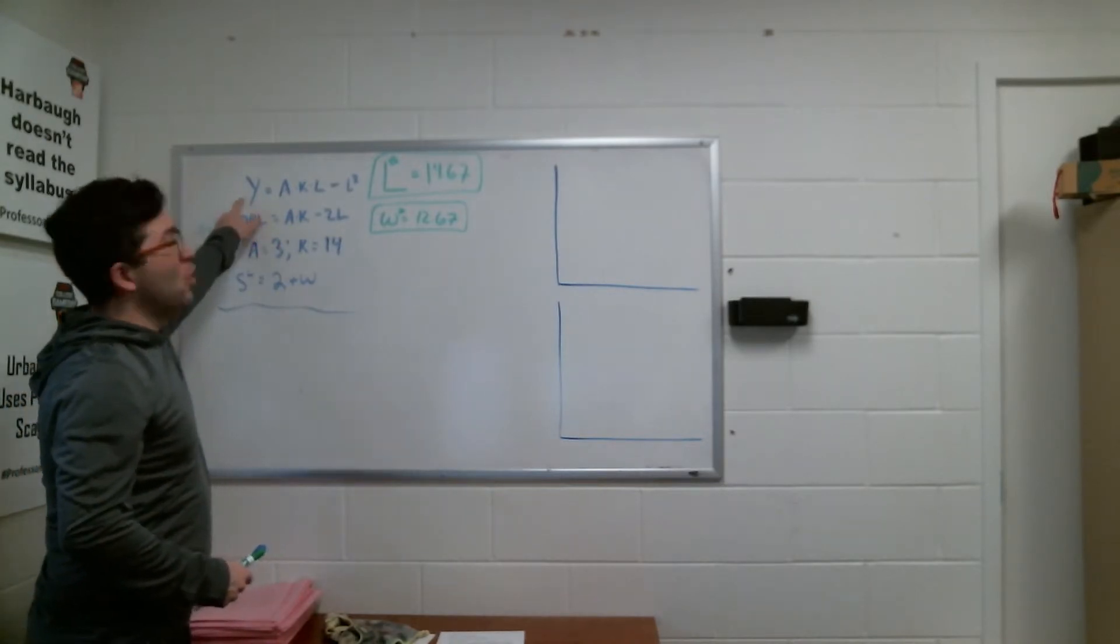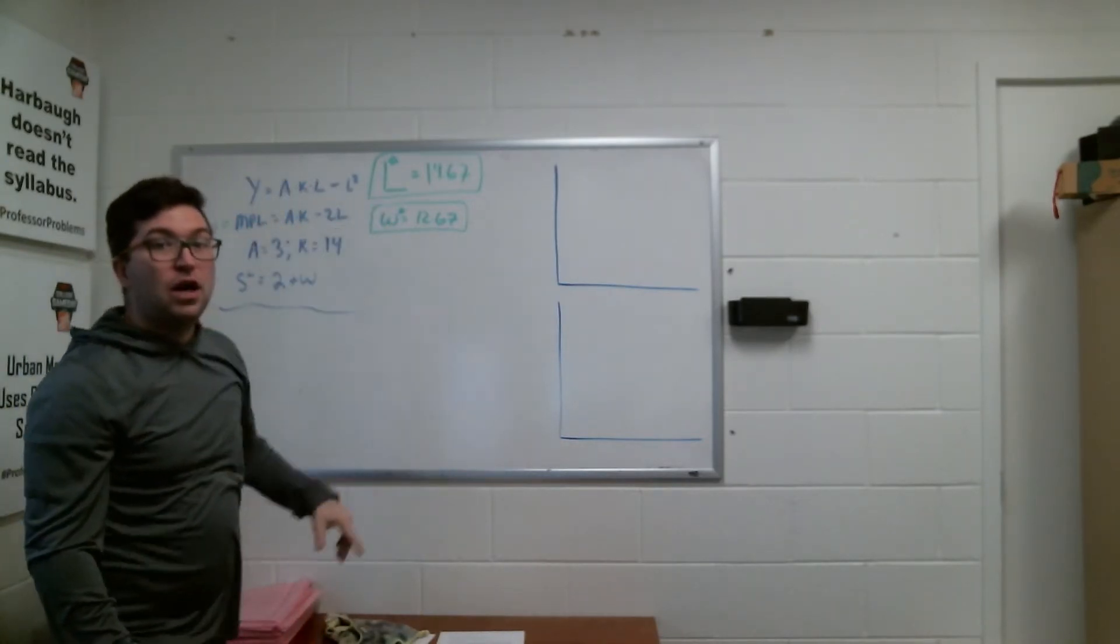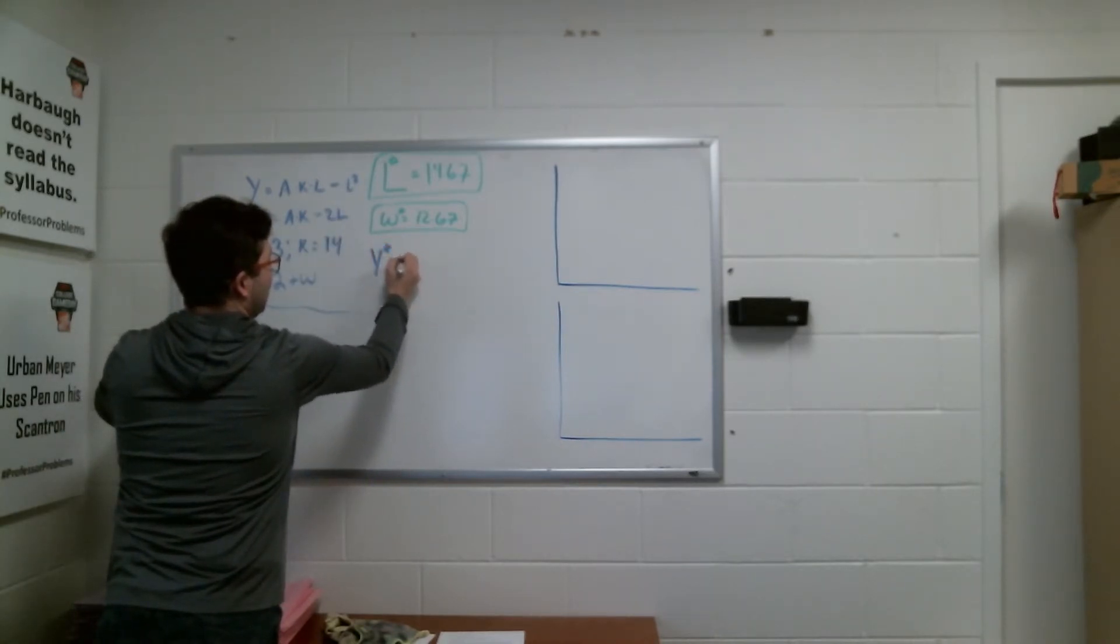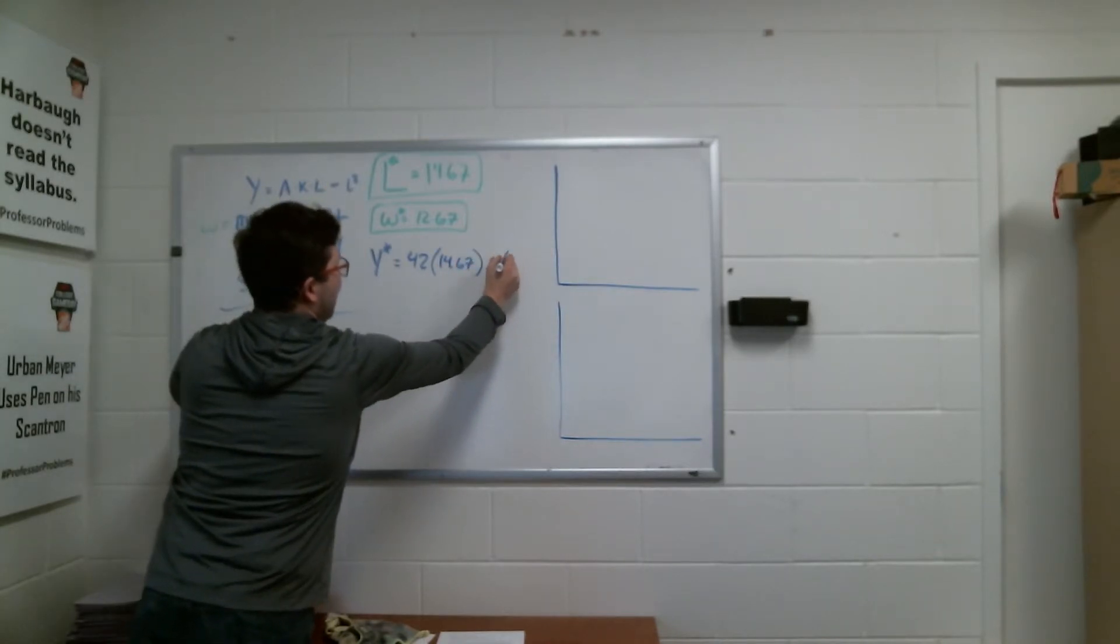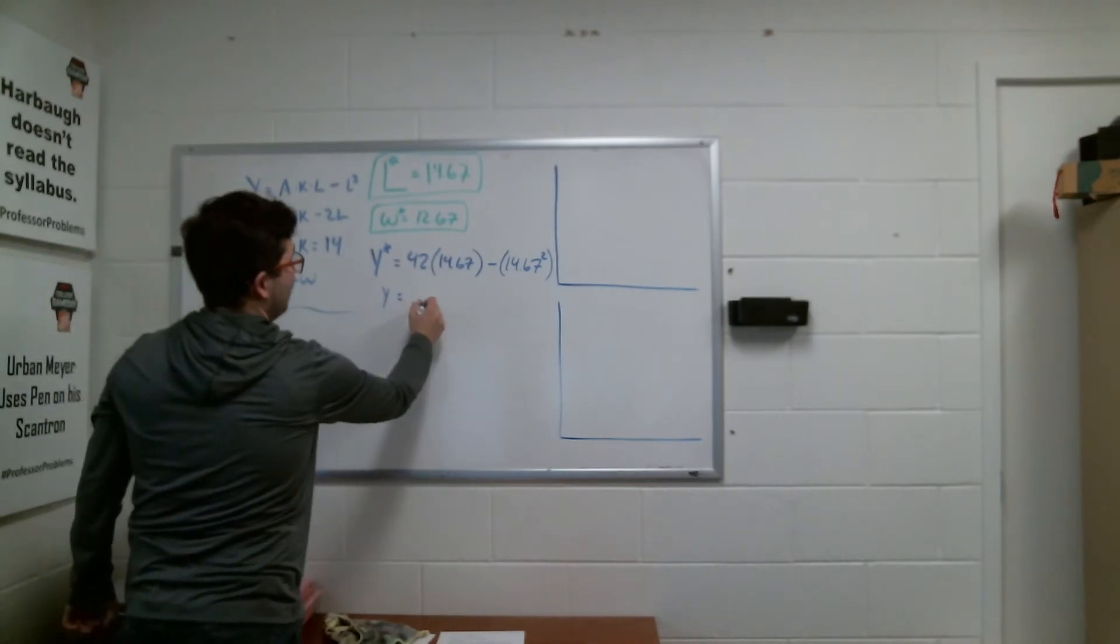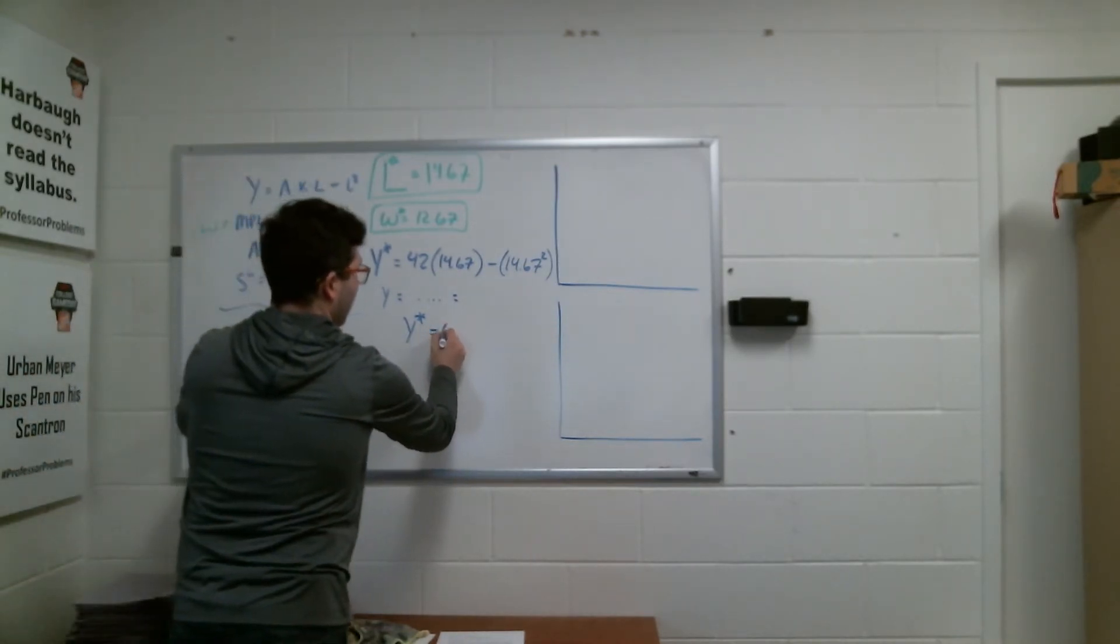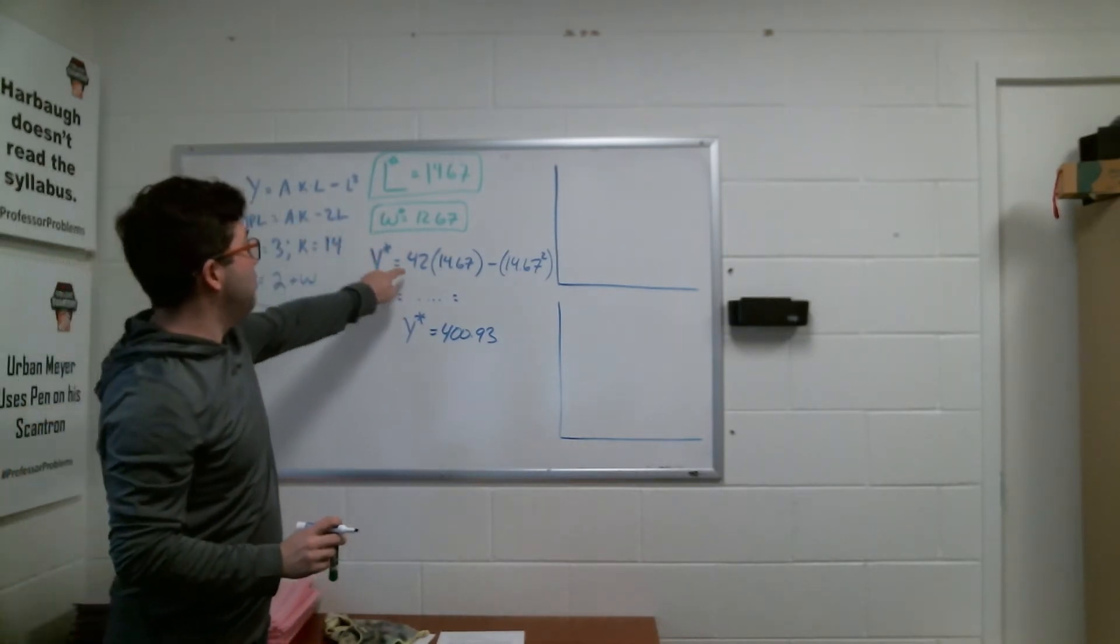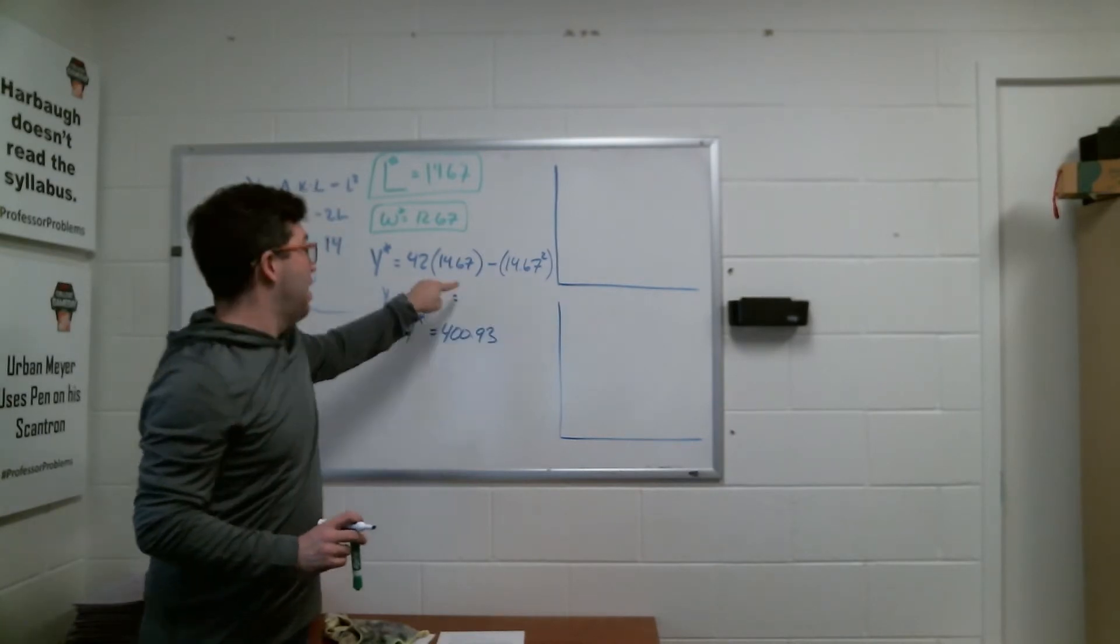The last unknown that we're trying to find here is the overall output, which is going to be our output that happens when we're at the full employment level of employment, our L star. And all we have to do is plug in the stuff that we know into my production function. So what is my production function when I plug in everything? I know my Y star is then going to be A times K, which we know is 42, multiplied by L, 14.67, and then we're going to subtract 14.67 squared. I'll do exactly what I do in class with my students, is I say we do some calculations here, and we get out, by plugging this into a calculator, we get 400.93. Please make sure you pause the video and you try this out to make sure that you're doing everything correctly.